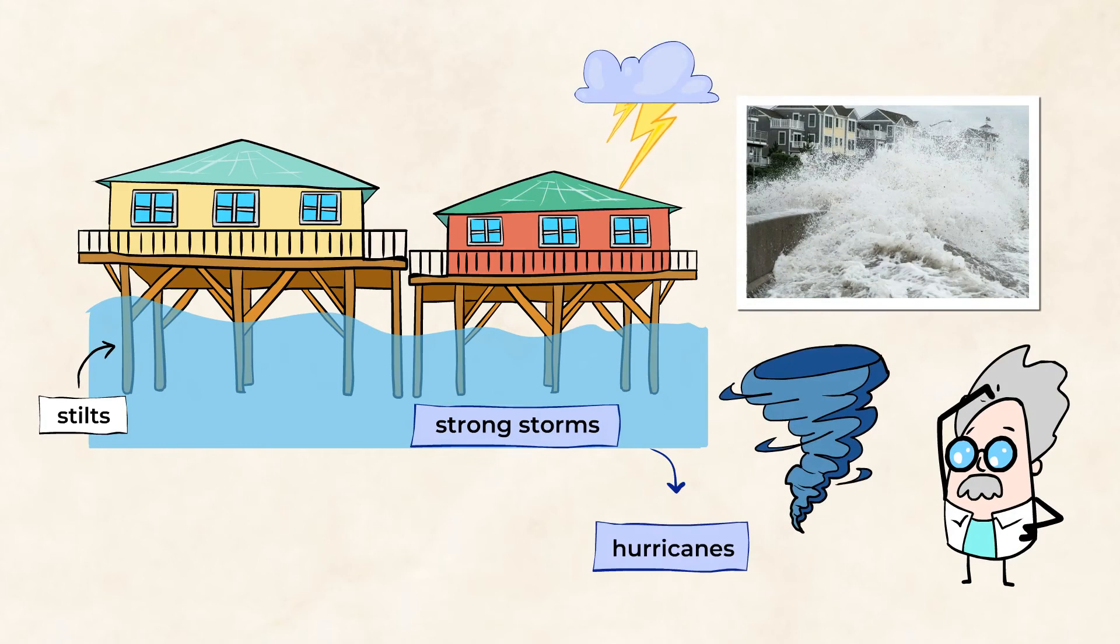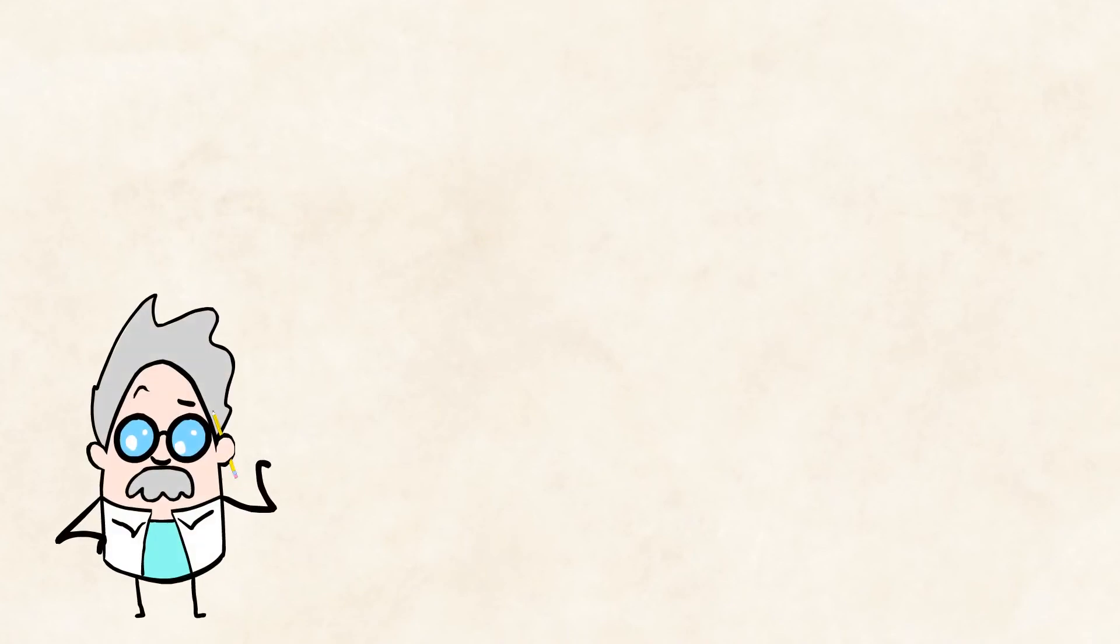If the houses are not elevated, well, they could be destroyed or even swept away by the ocean. So having a house built off the ground, sturdy, and built correctly has a better chance of surviving strong waves from the ocean. Another example of preventative construction is seawalls.